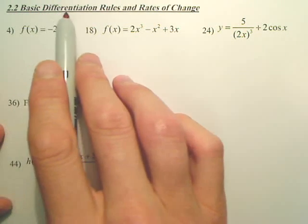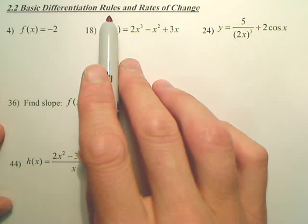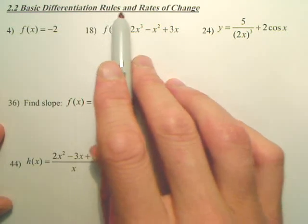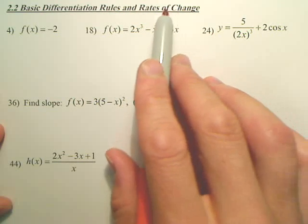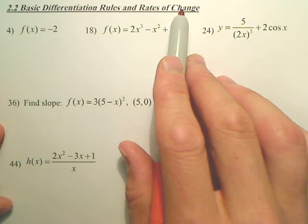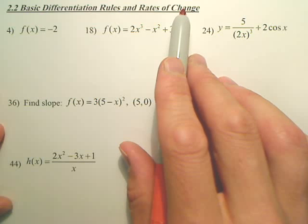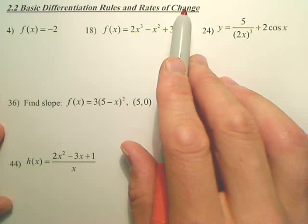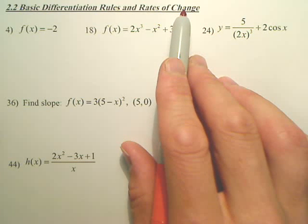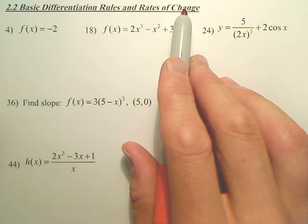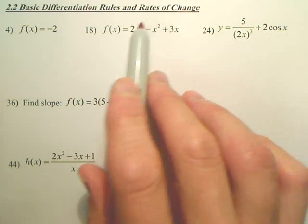Section 2.2 covers basic differentiation rules and rates of change. A rate of change is a derivative. When you hear 'rate of change,' it means derivative, which means slope. You'll get used to those terms being interchangeable.